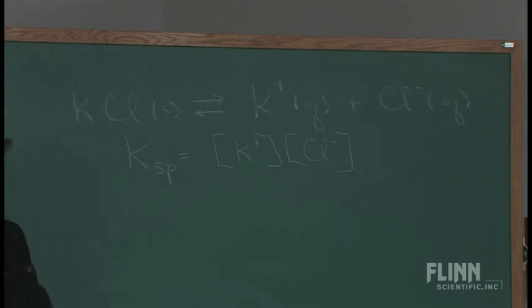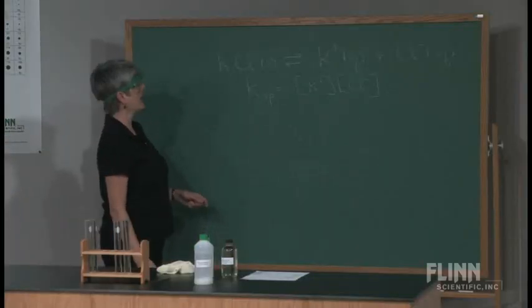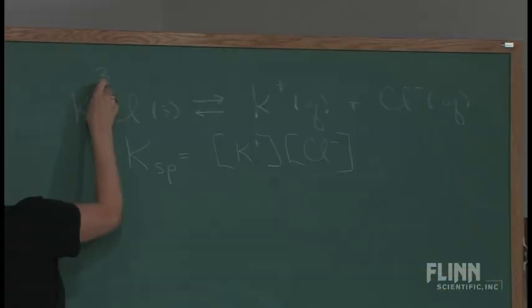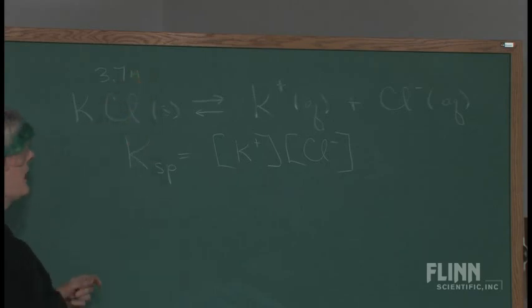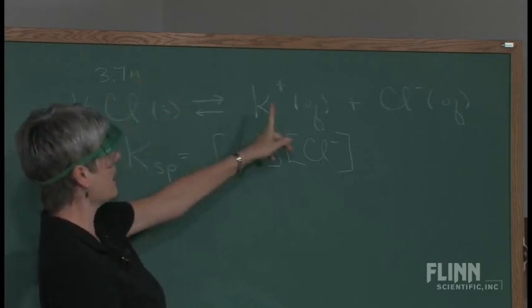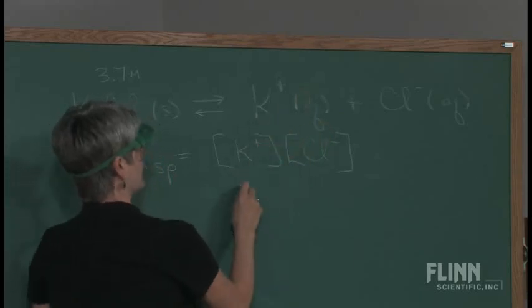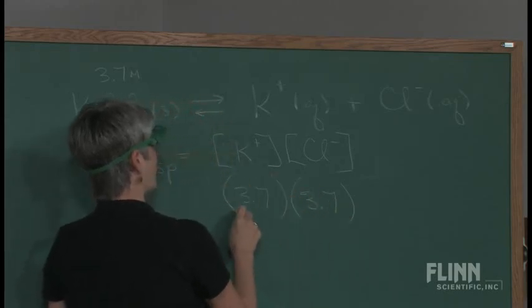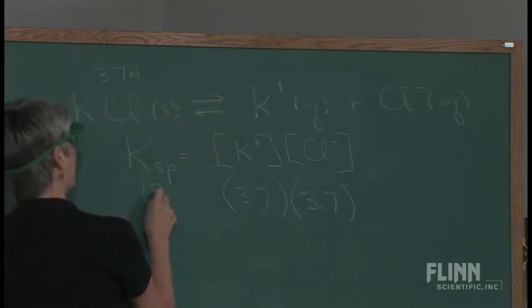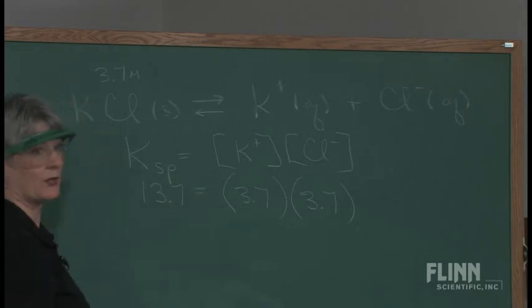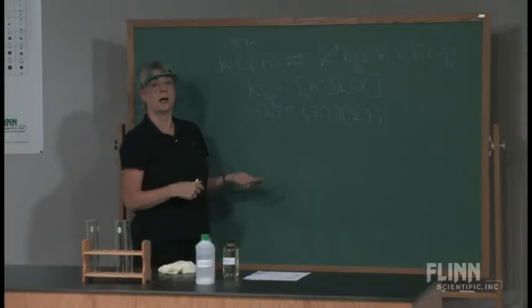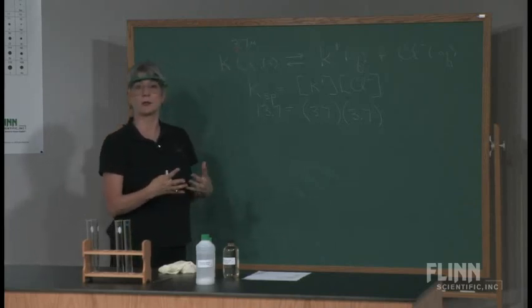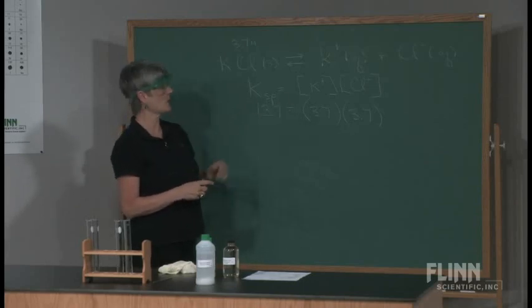Now, the table value tells me that potassium chloride when it's saturated is 3.7 molar. If the potassium chloride is 3.7 molar, then the ion concentration when that dissolves—it's one to one—so the potassium ion is 3.7 and the chloride ion is 3.7. So the Ksp of potassium chloride is 13.7. You might point out to the students that I'm giving them a value at about room temperature standard state, and that solubility does vary with temperature as well.